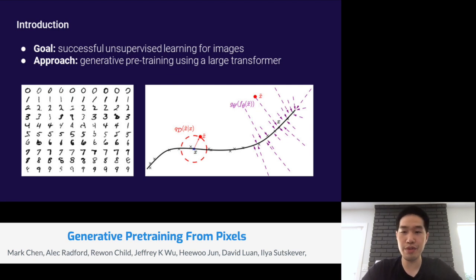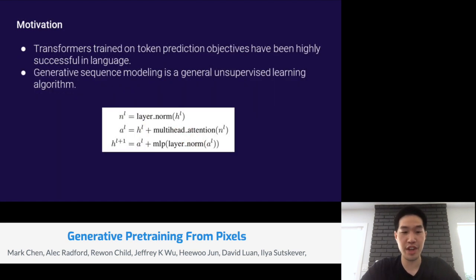However, these types of approaches fell out of favor as supervised methods, which leveraged large labeled datasets, came to dominate image classification benchmarks.